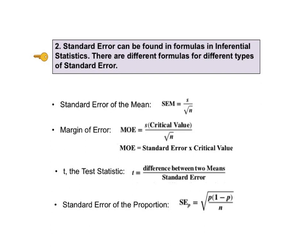Next we see that s divided by the square root of n is a component of the formula for margin of error. So we could rewrite that formula as MOE equals standard error of the mean times its critical value.